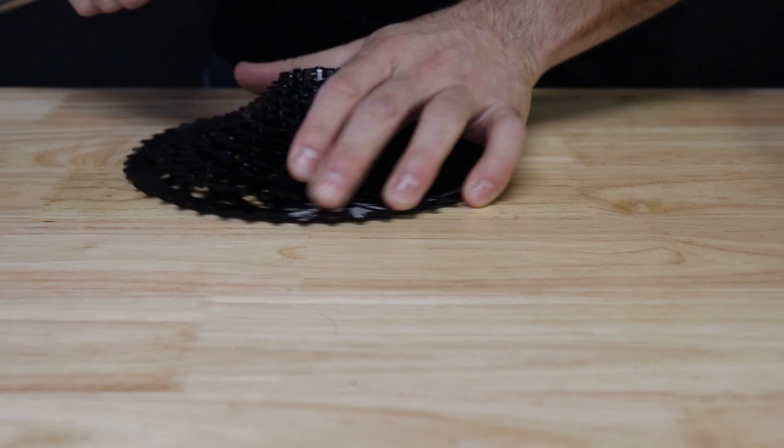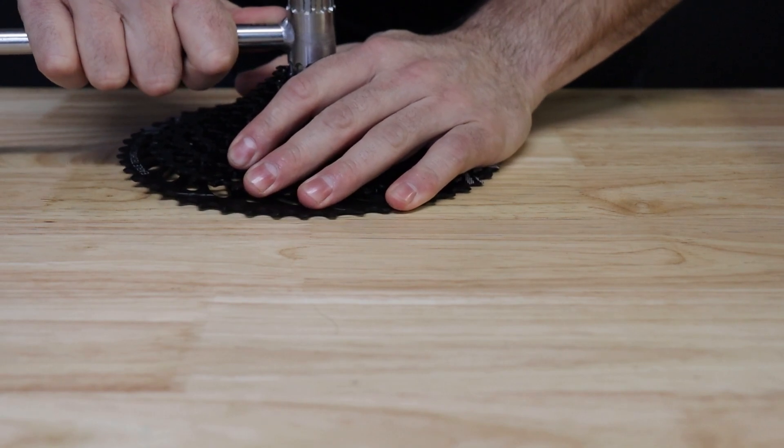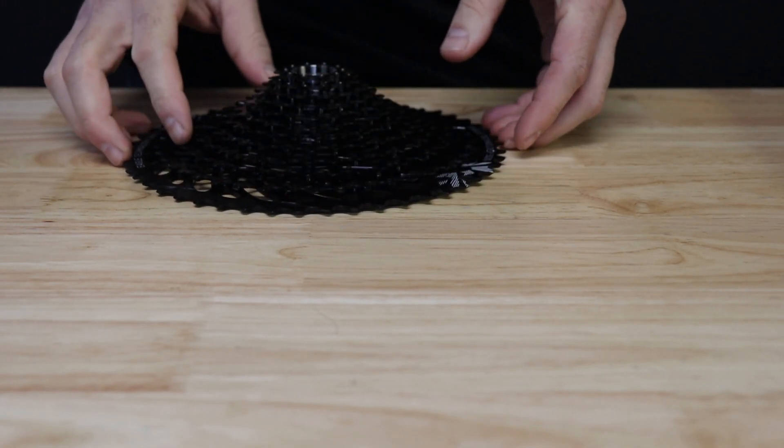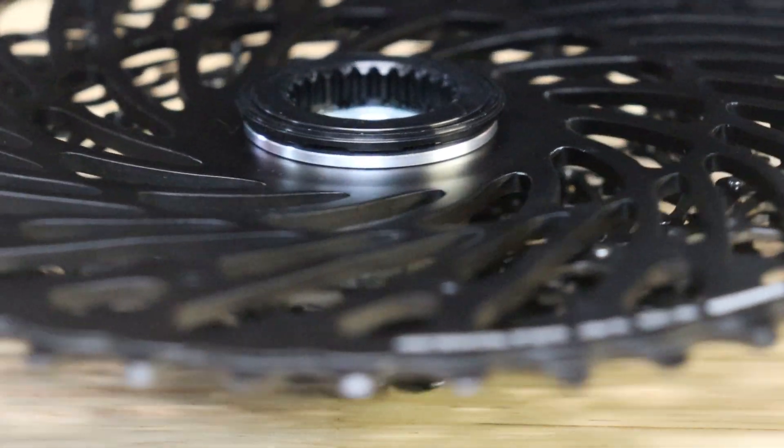You'll notice torque is a lot easier to reach on the cassette install when the spacer is installed correctly. And that's it. That is an XD cassette on an XDR freehub.